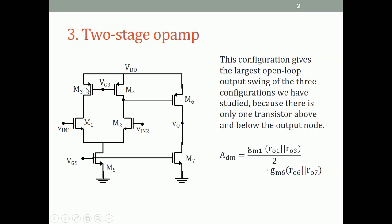The gain is GM1·(RO1 ∥ RO3)/2 — the factor of 2 comes from the differential mode gain of a differential amplifier — multiplied by the gain of the second stage, GM6·(RO6 ∥ RO7). Because MOSFETs have infinite input impedances there is no loading, so the gains simply multiply. This works out to approximately (GM·RO)²/8.